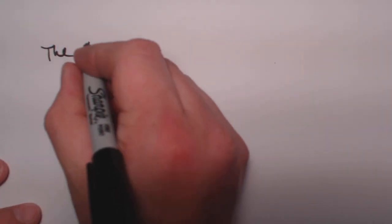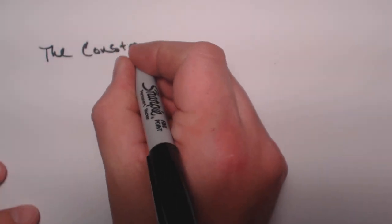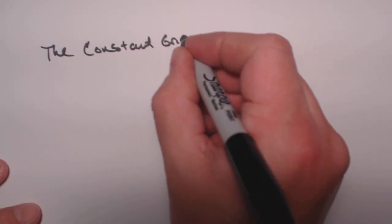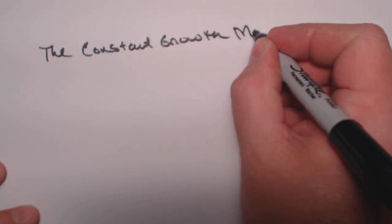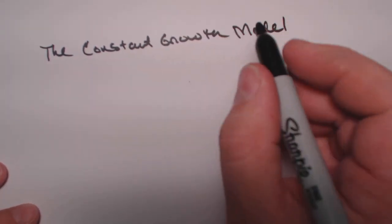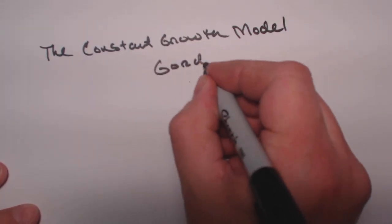The problem we're looking at in this video is something called the Constant Growth Model, also known as the Gordon Model.